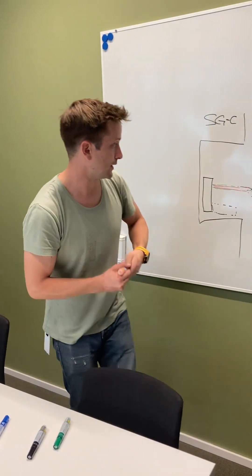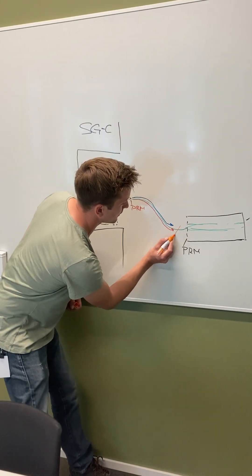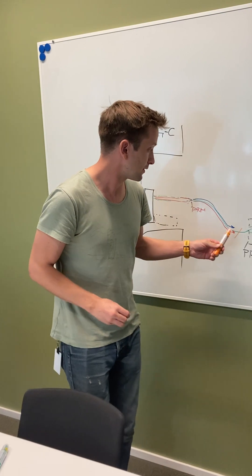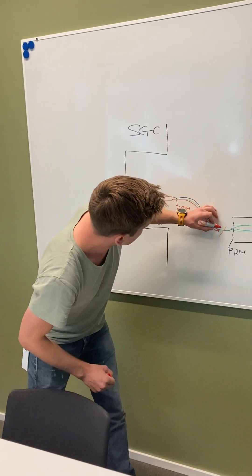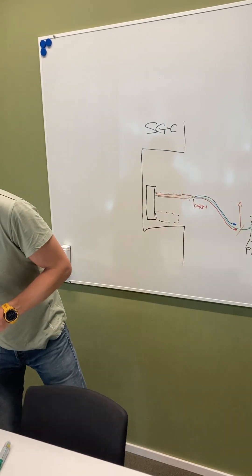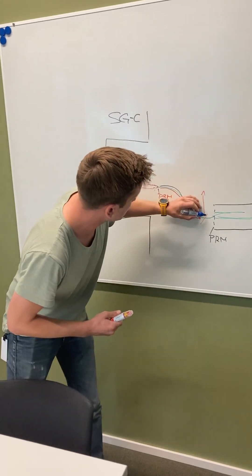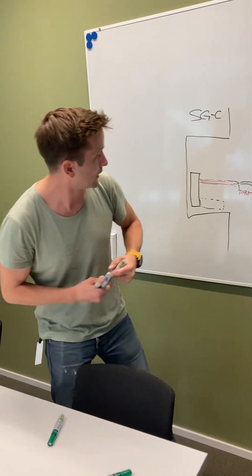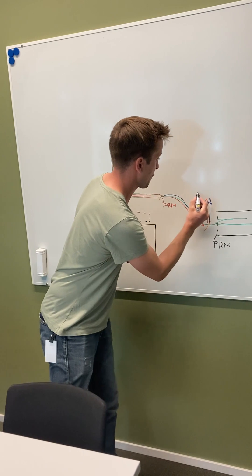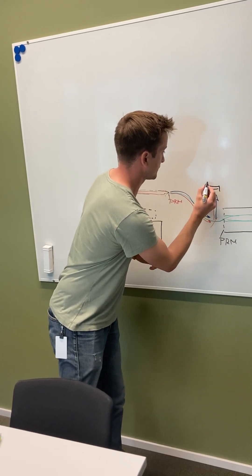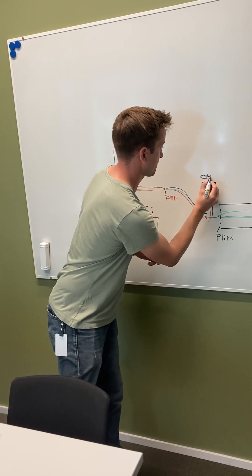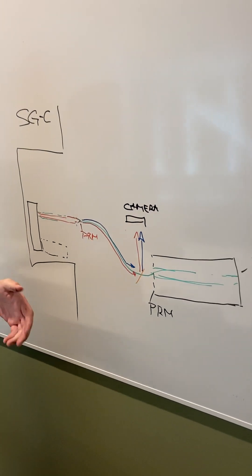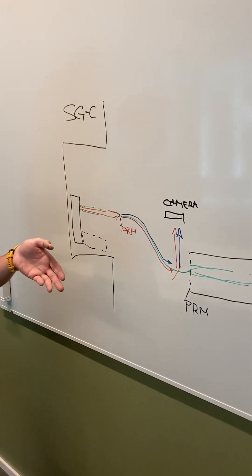Now, we cannot really measure distance with that setup. We need one more thing. What we need is a mirror that is mostly sensitive to the light that comes back. And this mirror then reflects our red beam up here, and it reflects our blue beam up here. And now we can start measuring distances. The way we do that is, we put a camera up here.